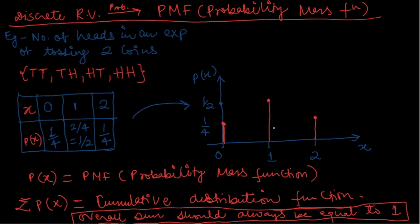If I draw this on a graph, the X axis represents the number of occurrences of heads and the Y axis denotes the probability of X. The probability mass function (PMF) is nothing but the distribution of probabilities of the occurrences — how probability is distributed across all individual values. For example, the probability of X equal to 2 is 1/4.